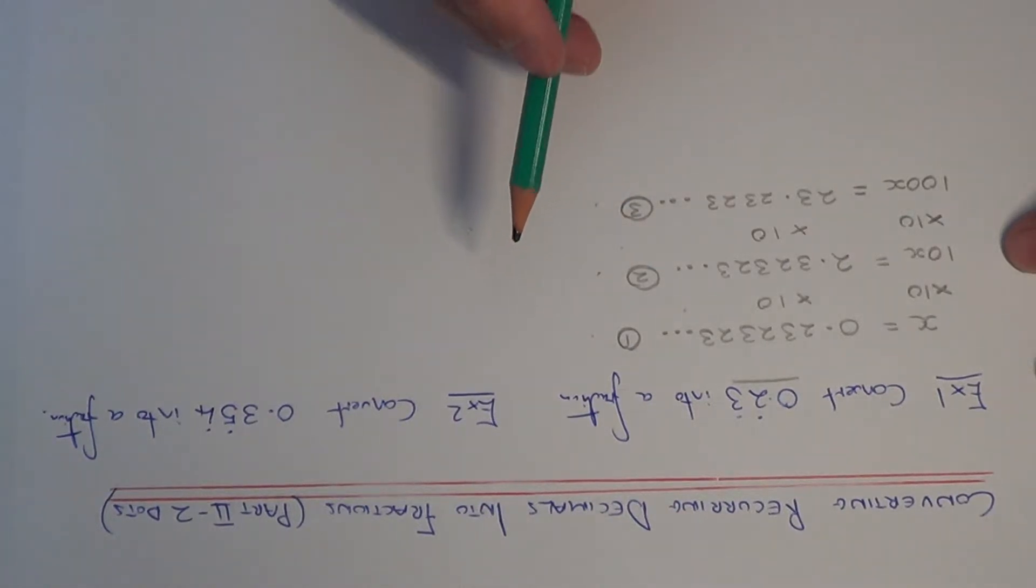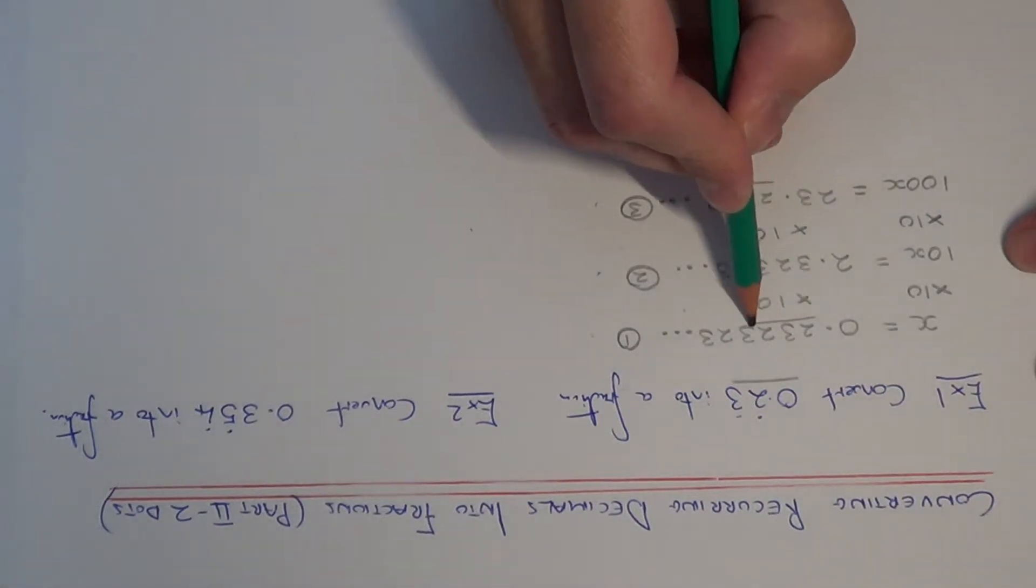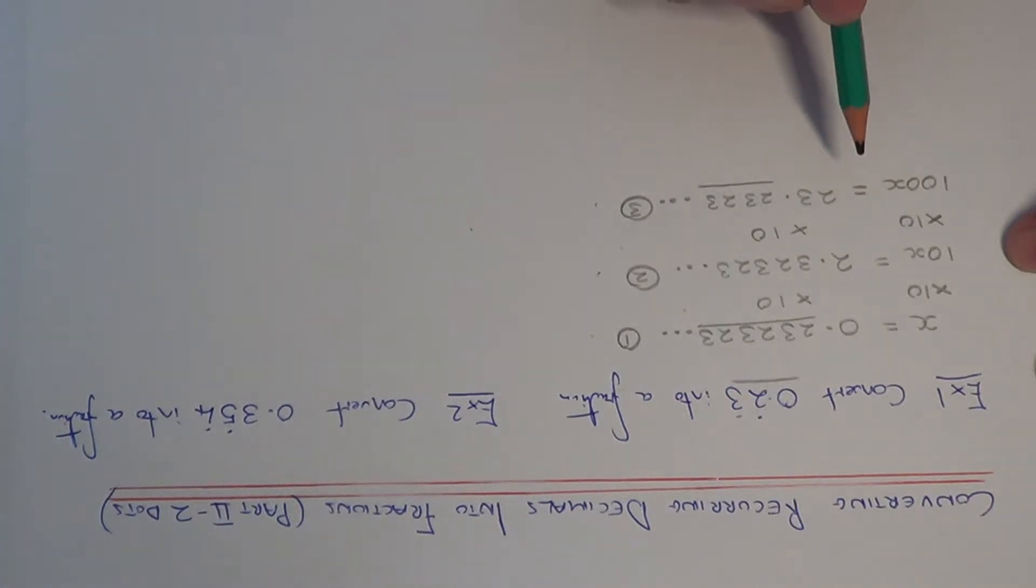Now if you notice that the numbers after the decimal point of my third equation match the numbers after the decimal point of my first equation. So I am going to subtract equation 1 from equation 3.